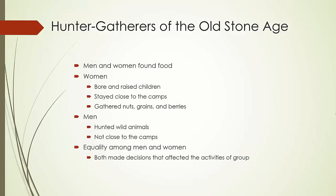Let's talk about the roles of women and men in the Paleolithic age. Everybody had to participate for the survival of the group, for food gathering and hunting. Men and women were thought to be somewhat equal because they both played a major role in the survival of their community. Women bore and raised children, stayed close to camp, and were in charge of getting nuts, grains, and berries, which played a huge part in the diet. The men, who were not close to camp, hunted wild animals, which was thought to require great strength.